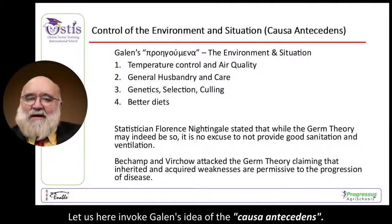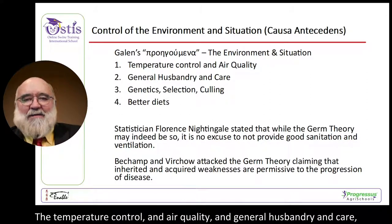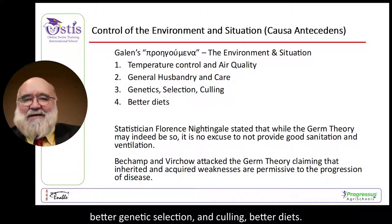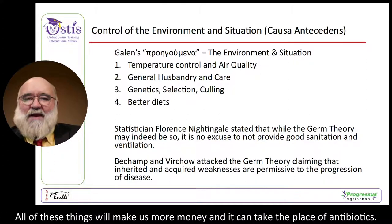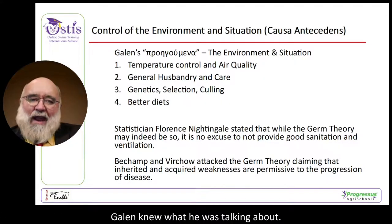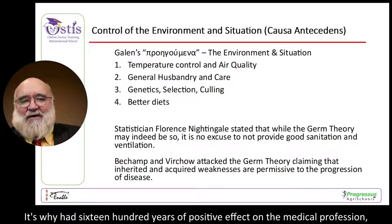Let us invoke Galen's idea of the cause of antecedents: the environment and situation of the animal, temperature control and air quality, general husbandry and care, better genetic selection and culling, and better diets. All of these things will make us more money and can take the place of antibiotics. Seriously, they will work. Galen knew what he was talking about — it's why he had 1,600 years of positive effect on the medical profession, and it's why we still read him today.